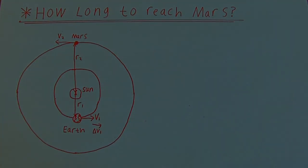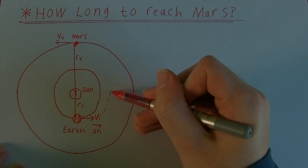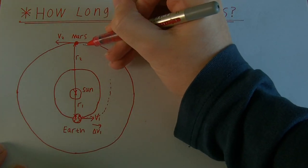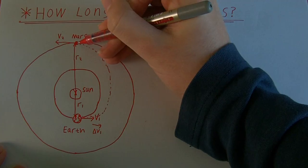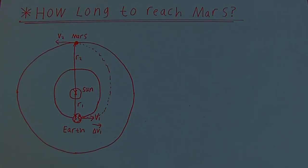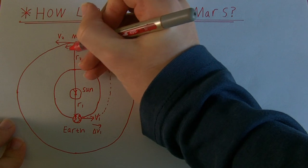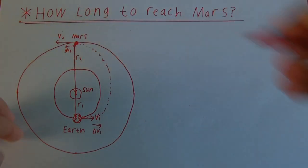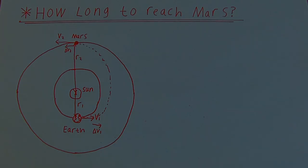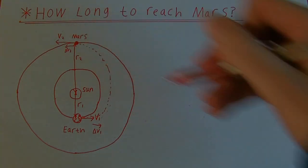This little change in velocity will cause our circular orbit to transform into an elliptical orbit. We'll drift outwards until we are at the same distance from the Sun that Mars is at. But once we drift out to that point, our velocity isn't quite as large as Mars's velocity around the Sun, so we're going to have to give ourselves a little extra kick — a little delta V2 — in order to match velocity with the planet Mars. So now that we've set it up, we can ask: how long will we be drifting along this transfer orbit?